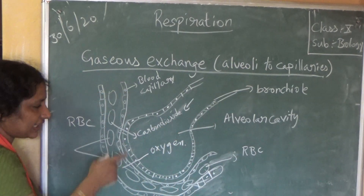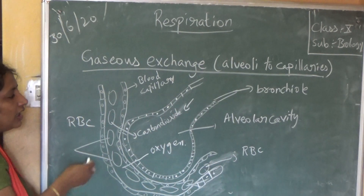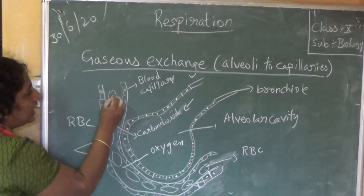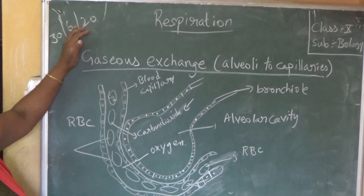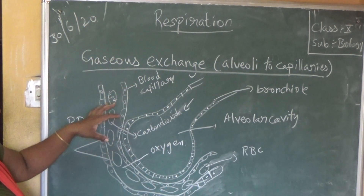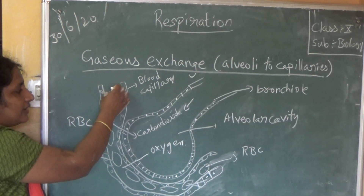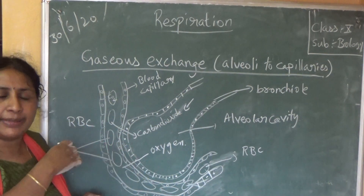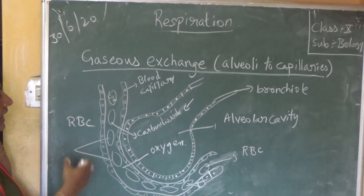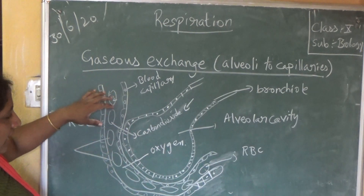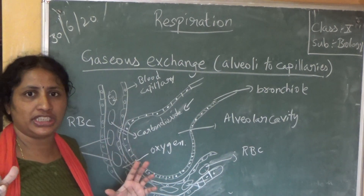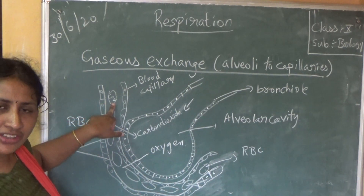The blood capillaries are surrounding the alveoli, and they are also single membrane. Inside the blood capillaries, RBC cells are flowing. These RBC cells are bringing carbon dioxide from different tissues of the body. The blood coming in is a dark reddish-brownish color because it is filled with carbon dioxide.